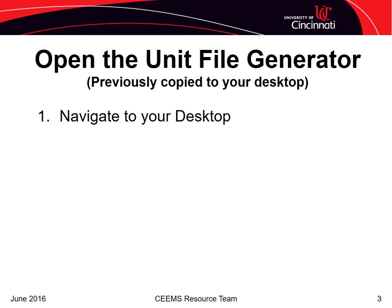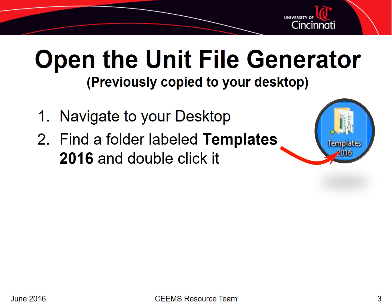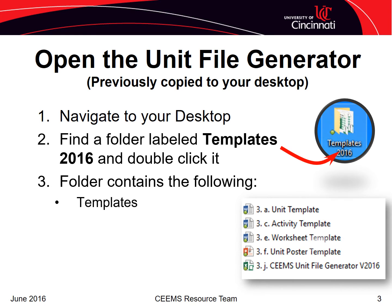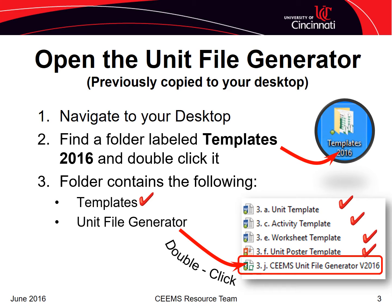Before we go on, let's open the unit file generator. To open it, navigate to the desktop and double click on the folder labeled Templates 2016. When you open that folder, you'll find five files including a unit template, an activity template, a worksheet template, and a poster template. The unit file generator is the last document on the list and can be opened by double clicking on it.